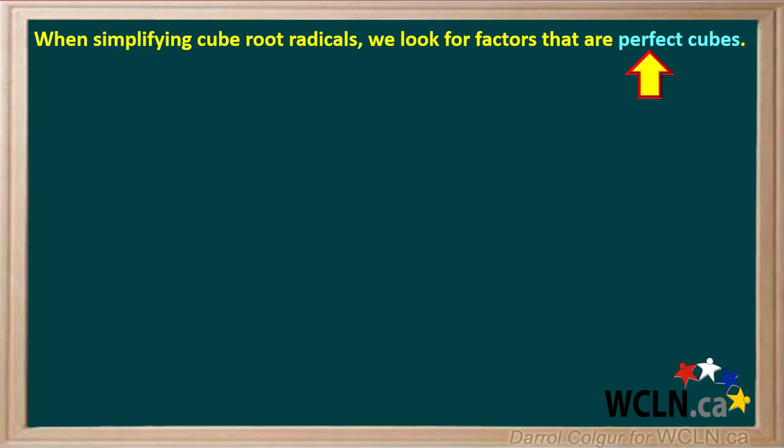When simplifying cube root radicals, we look for factors that are perfect cubes. Remember, a variable that is a perfect cube has an exponent that's divisible by 3.